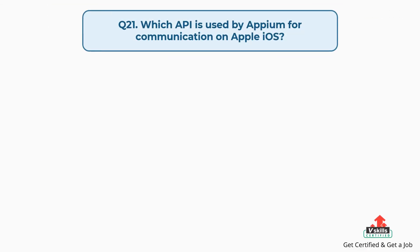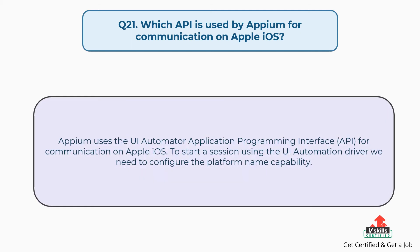Question number 21: Which API is used by Appium for communication on Apple iOS? Appium uses the UI Automator Application Programming Interface (API) for communication on Apple iOS. To start a session using the UI Automation driver, we need to configure the platform name capability.